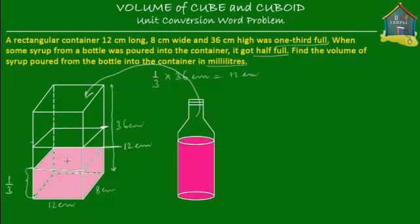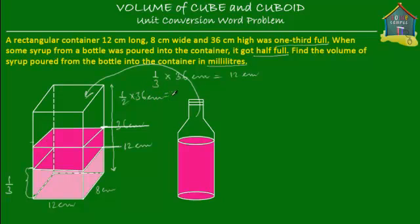This is half full. Let's paint it. So when this is half full, what can you tell about this depth? Well, this depth would be half of 36 cm, and that's equal to 18 cm. So this mark over here is equal to 18 cm.